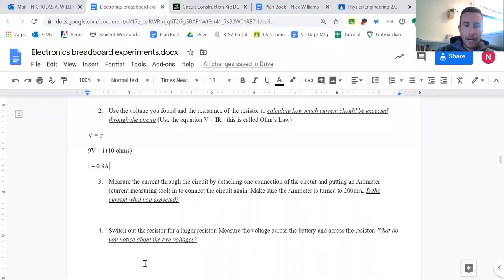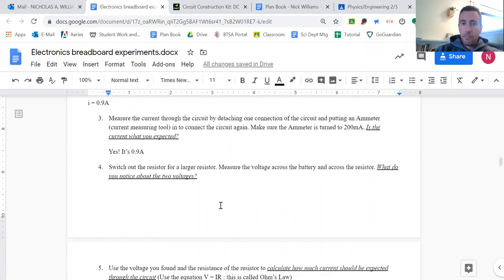So I would go back into my answers here. Make sure the ammeter is the current what you expected. Yes, it's 0.9 amps. Switch out the resistor for a larger resistor. Measure the voltage across the battery and across the resistor.